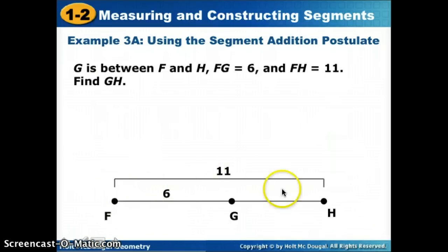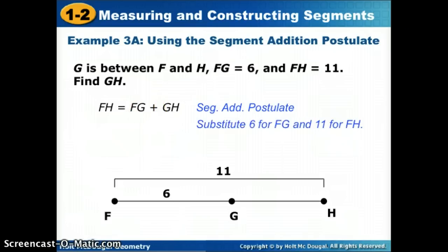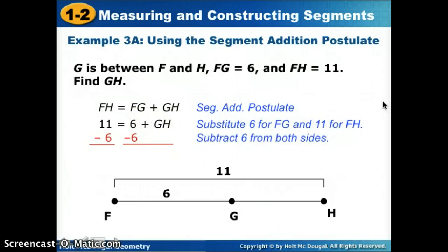We're going to break apart what are the parts. The whole is FH, which equals a part, FG, plus GH. Now all we do is substitute. We're going to plug in the measures they gave us. I know that FG is 6 and FH is 11. So if I plug those numbers in, it says find GH. That's the only variable I have left. For algebra, to get GH by itself, we subtract 6, and get that GH is 5.